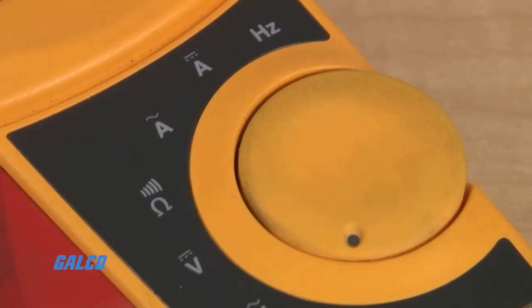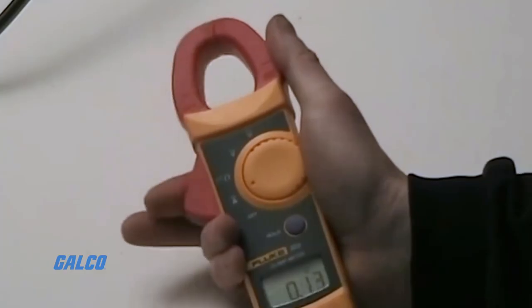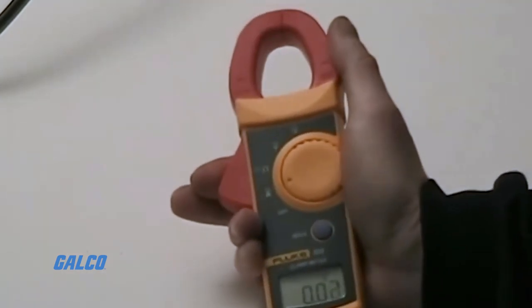First, you will want to take the circular dial on your ammeter and switch it to amperage mode. You will notice that there is a large red triangle protruding from the side.